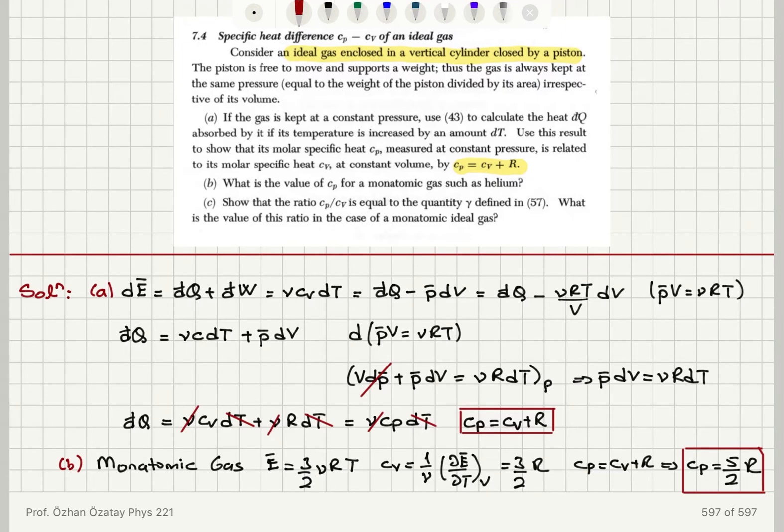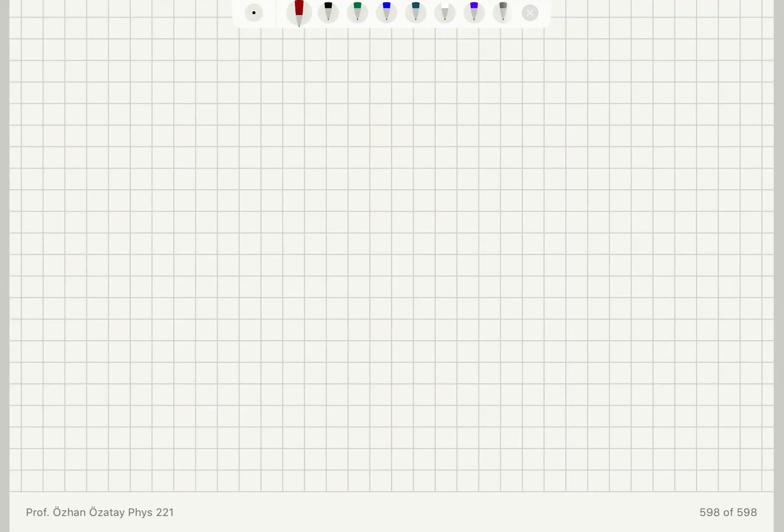And let's talk about cp over cv ratio in part c. Gamma, which is cp over cv ratio is cv plus r over cv. So gamma is equal to 5 over 2 r for a monatomic gas divided by 3 over 2 r. It is going to be equal to 5 over 3 for the monatomic case.